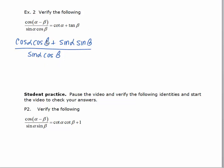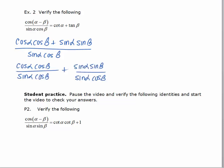Using one of the strategies that we learned in the last section, we're going to rewrite this as two separate fractions. In the first term, the cosine beta cancels out. We get cosine alpha over sine alpha, which is cotangent alpha.